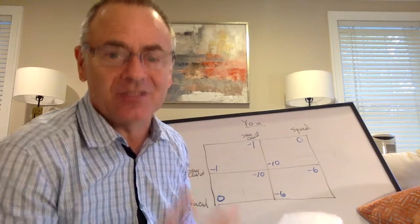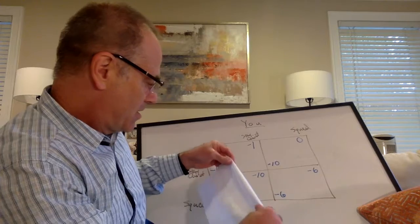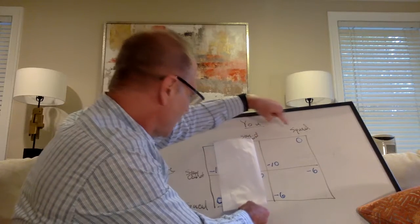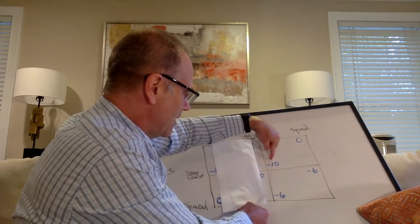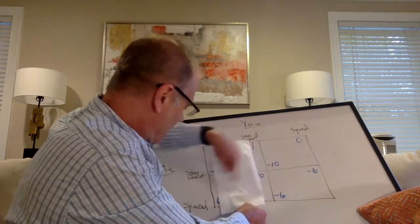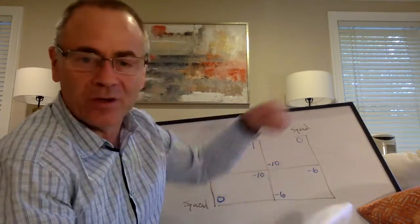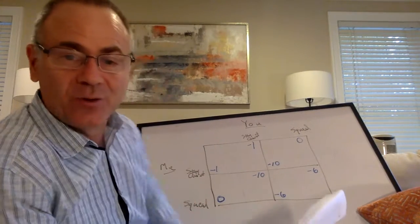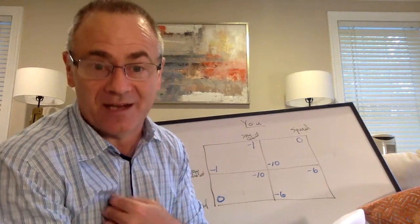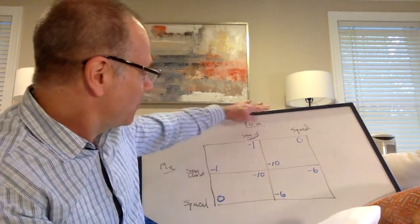Now suppose on the other hand, I assume you're going to squeal. Paper over this part of the figure. I know you're going to squeal. If I stay quiet, I'm going to get ten years in jail. But if I squeal, I get six years in jail. I'm better off squealing because six years in jail is better than ten. Notice no matter what you do, whether you stay quiet or you squeal, I'm better off squealing. We'd say in game theory I have a dominant strategy. No matter what you do, I'm best off squealing.